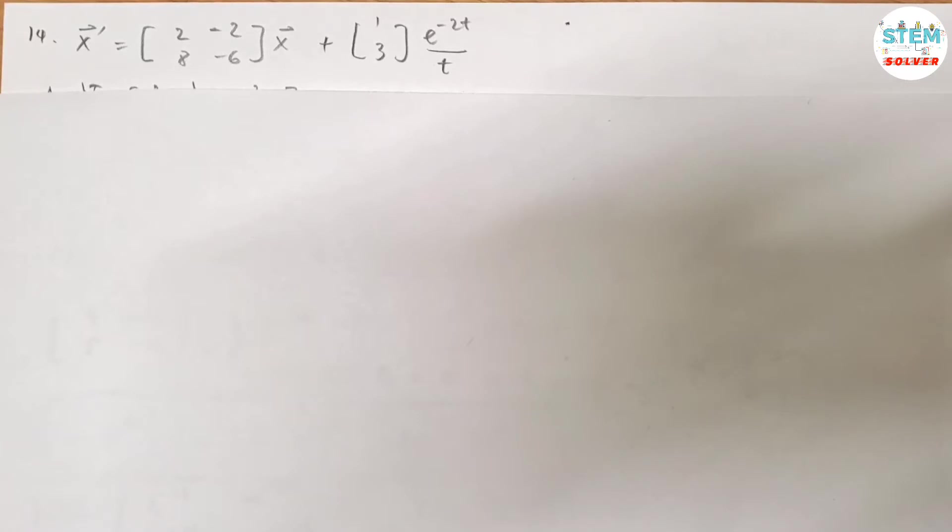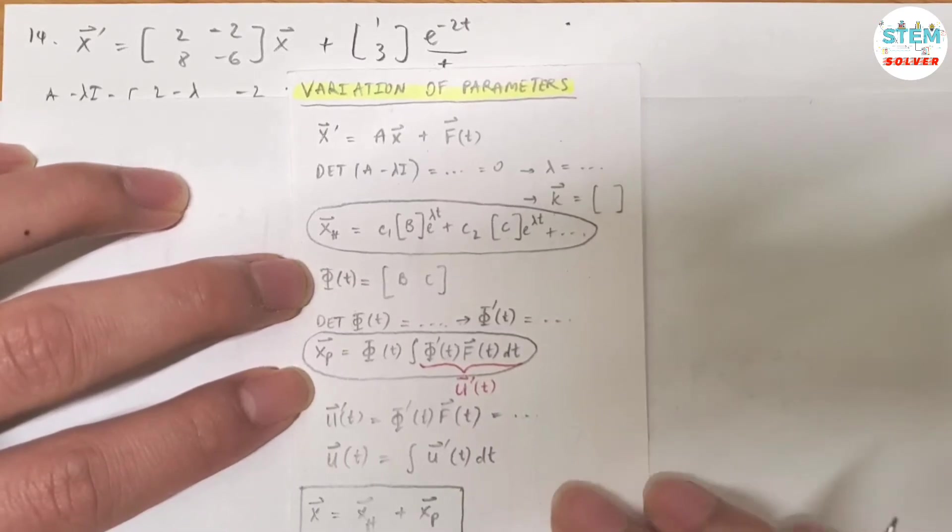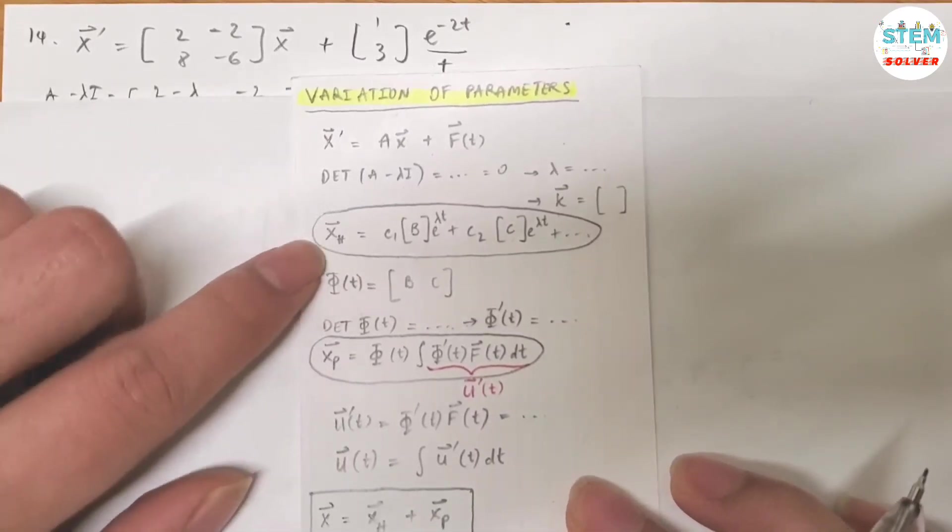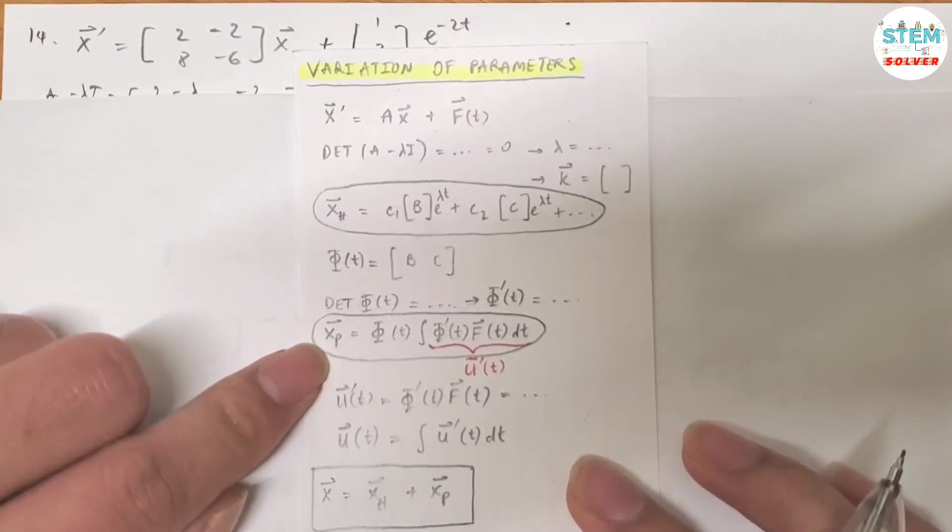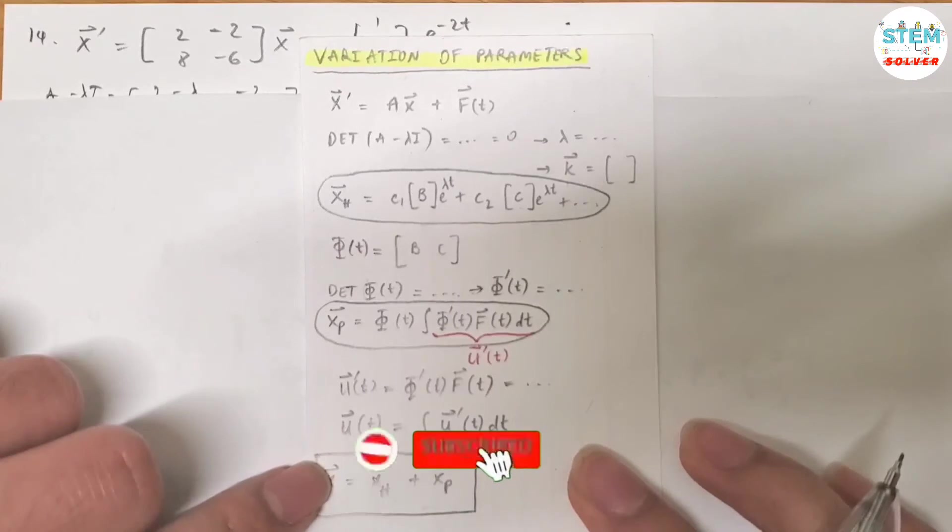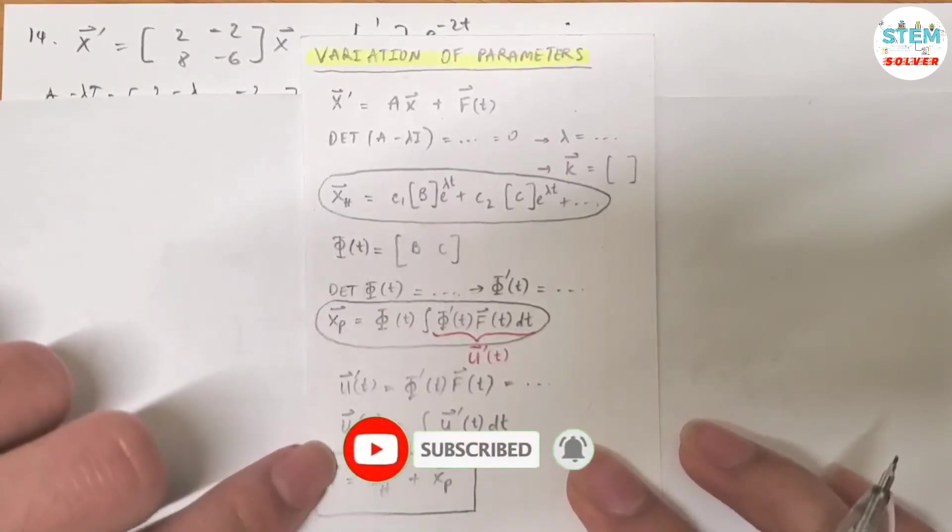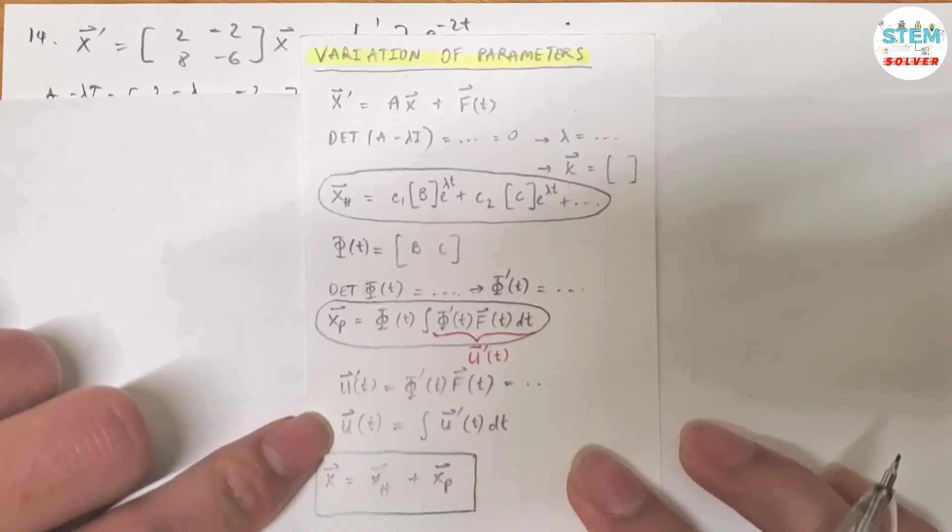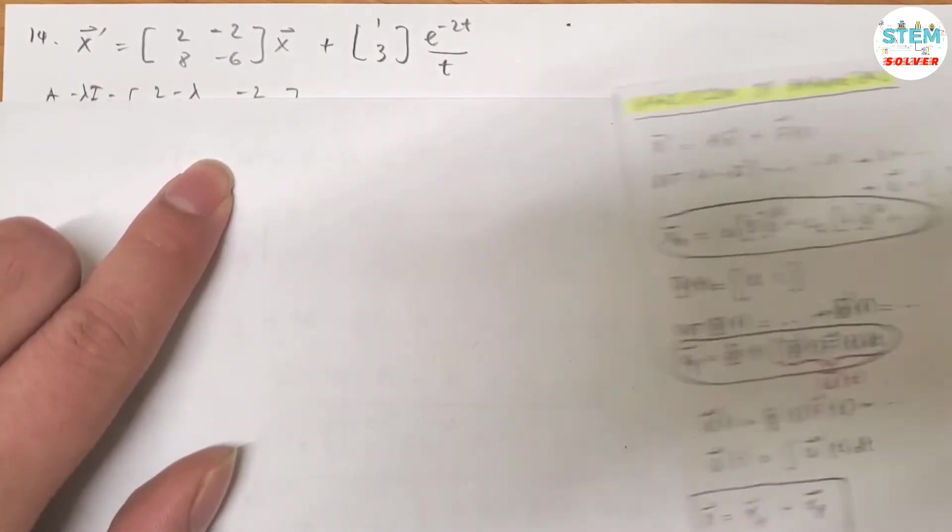Variation of parameters to solve the given system. Here are the steps you need to use when you use variation of parameters: First find the homogeneous solution, then find non-homogeneous solution. For the final answer, you add them together. I'm sure you already learned this, so I'm not gonna spend time going over it, but I will walk you through the problem step by step.